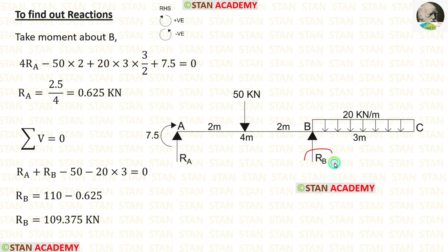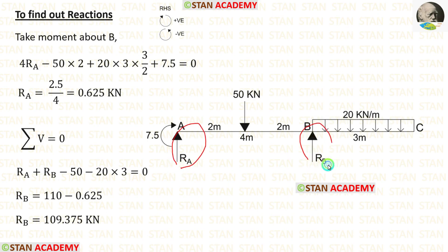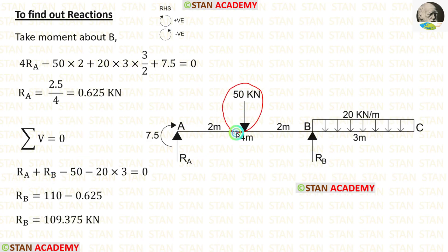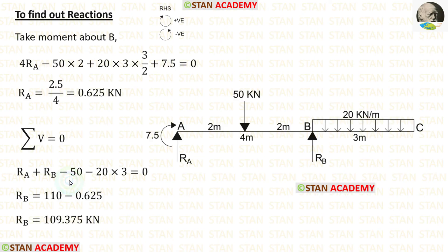To calculate RB, we apply sigma V = 0. RA and RB act upwards, so both are positive. The loads act downwards, so they are negative. Using the already calculated RA value, we finally obtain RB.